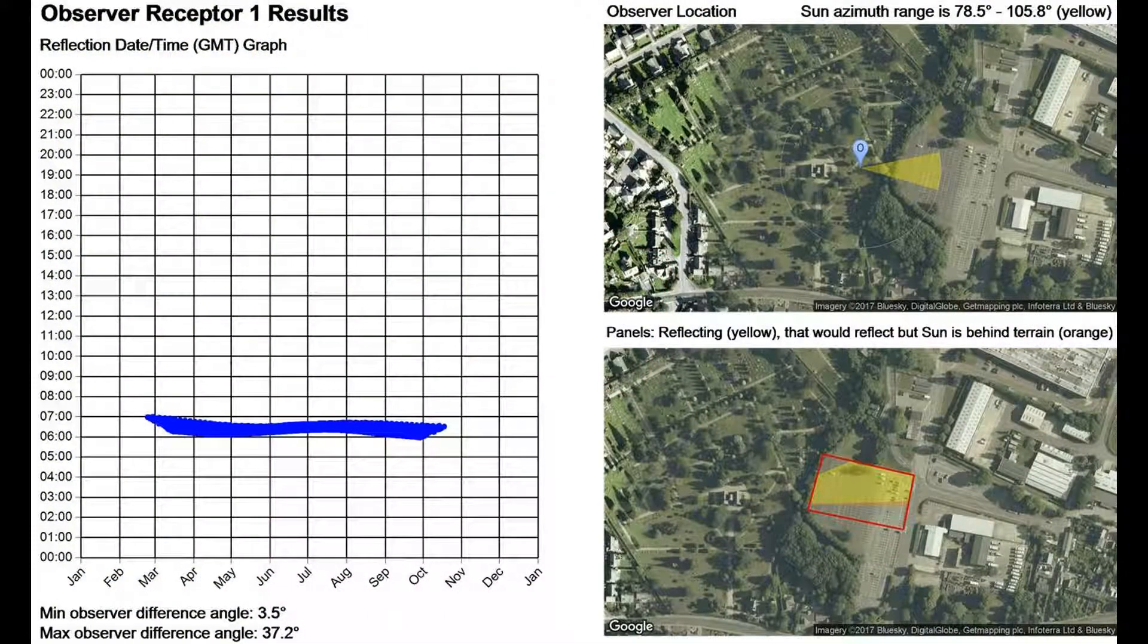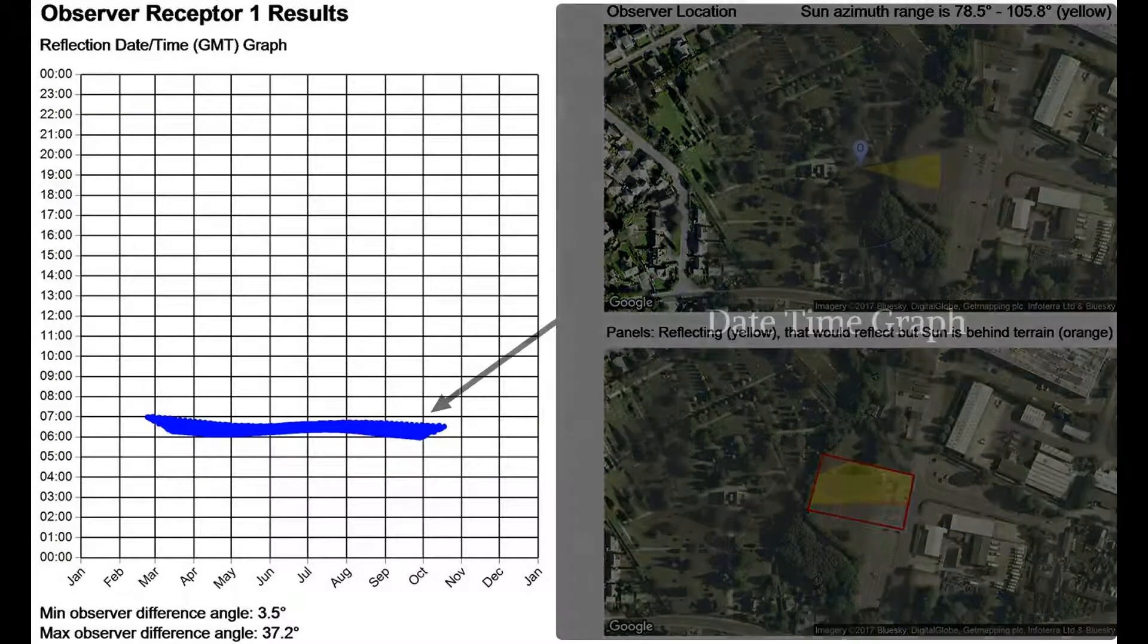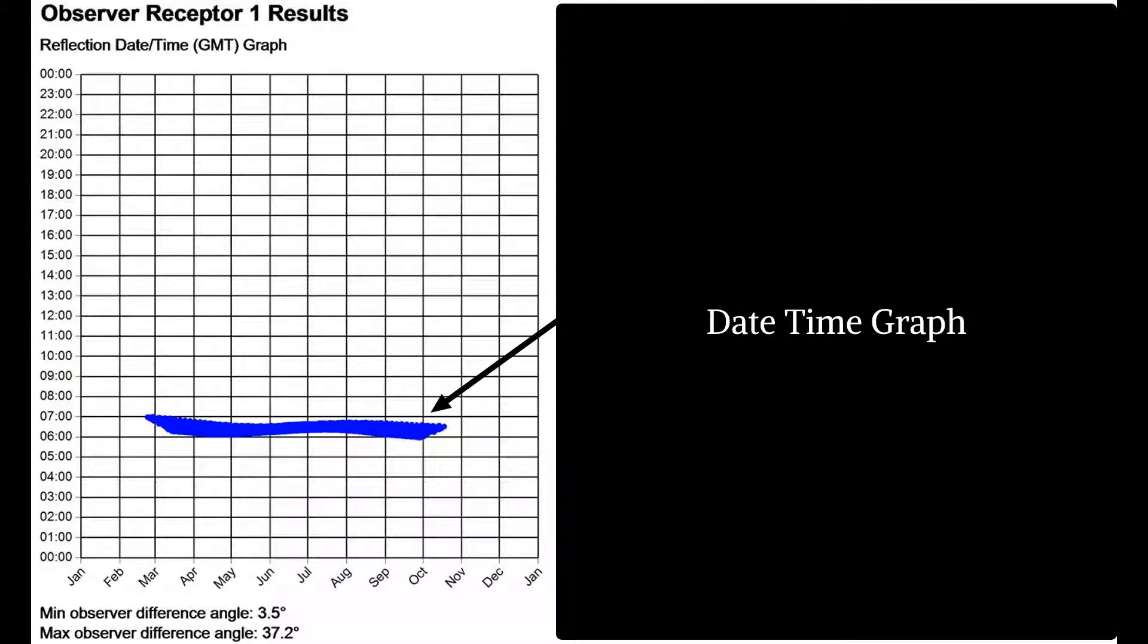Each component of the chart shall now be discussed. The date-time graph. This chart shows the time and duration for which glint and glare effects could occur at the assessed receptor.